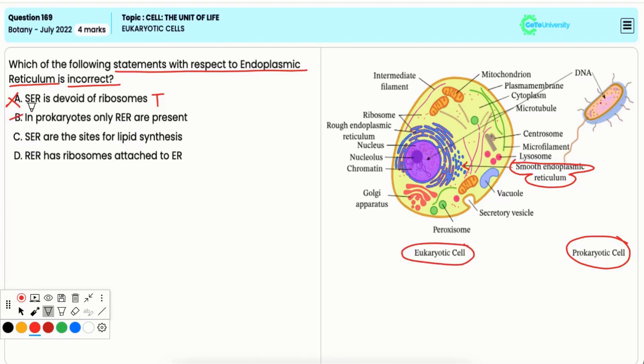Option C: SER are sites for lipid synthesis. This is true. SER is involved in the synthesis of lipids, including phospholipids and steroids. Hence, it is an incorrect option.